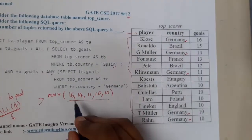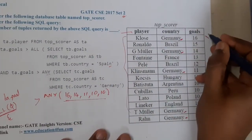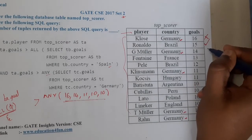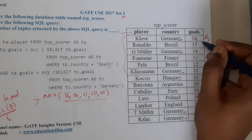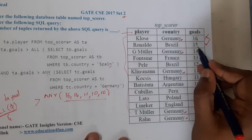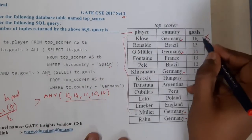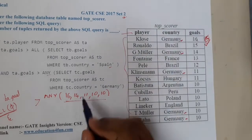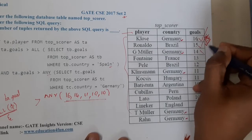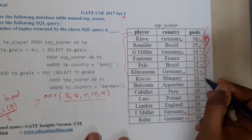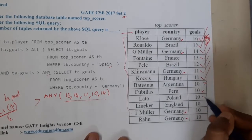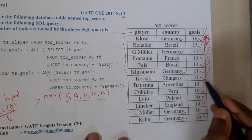So 16 is greater than at least one of {16,14,11,10,10}? Yes — 16 is greater than 14, 11, and 10, so 16 comes through. Similarly 15 comes, 14 comes, 13 comes, 12 comes, 11 comes, and 11 comes again. But 10 is NOT greater than 10, so 10 does not qualify.